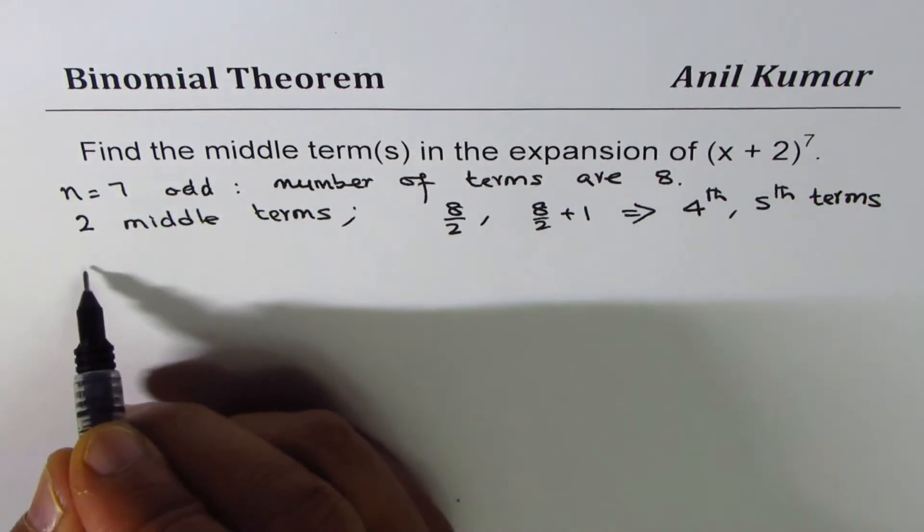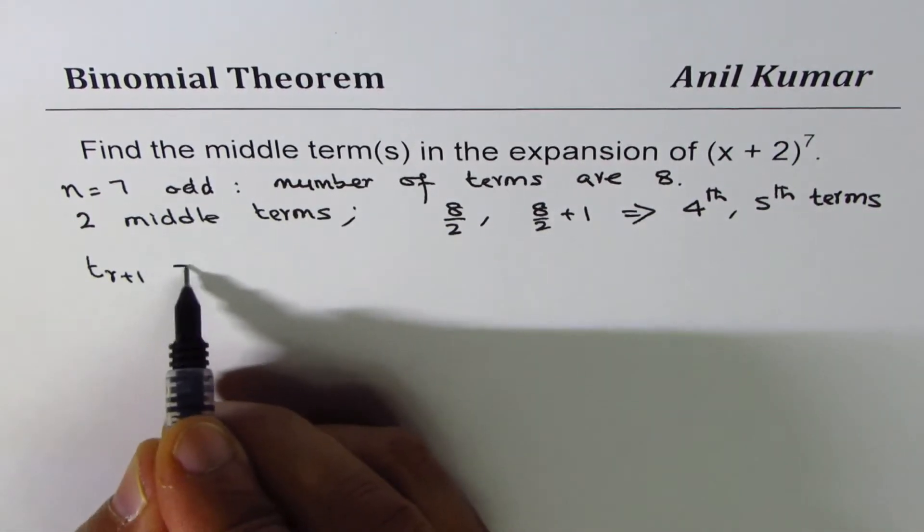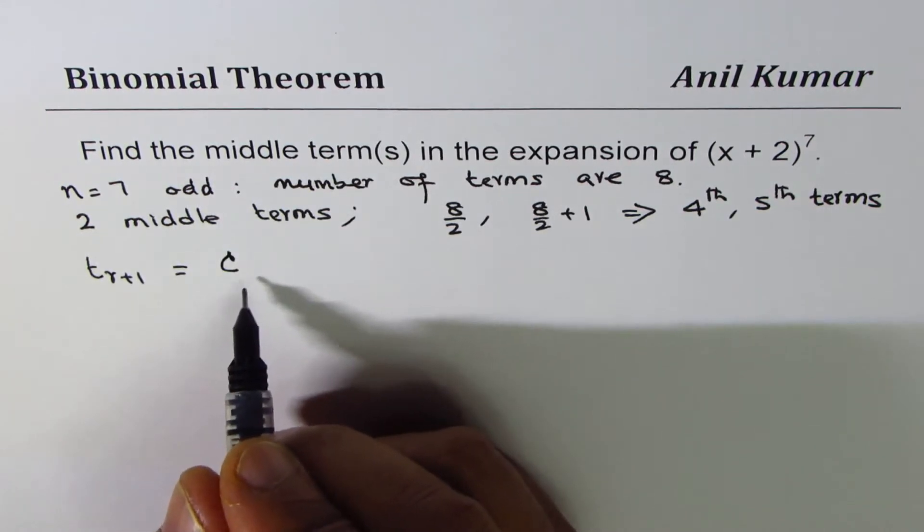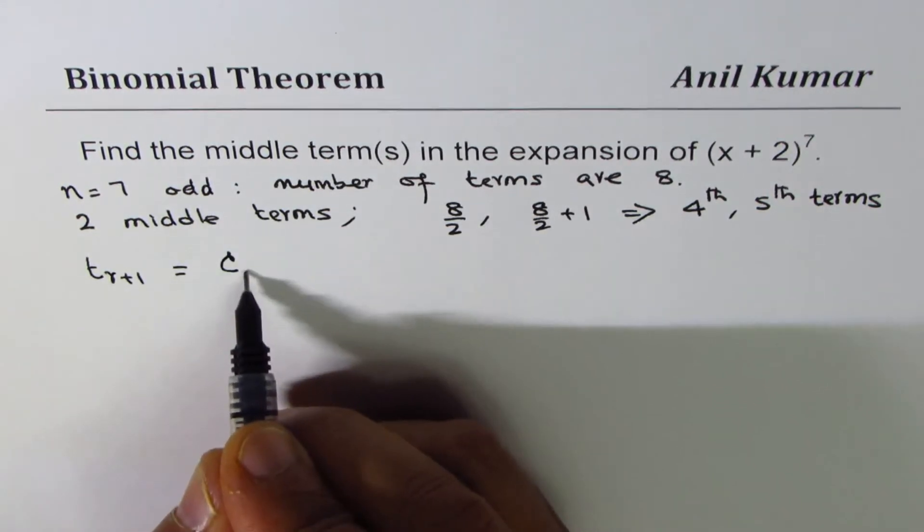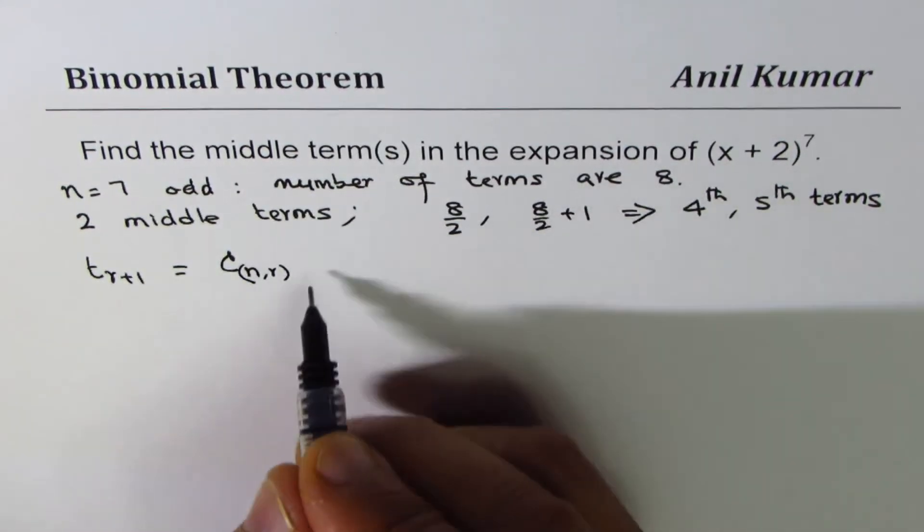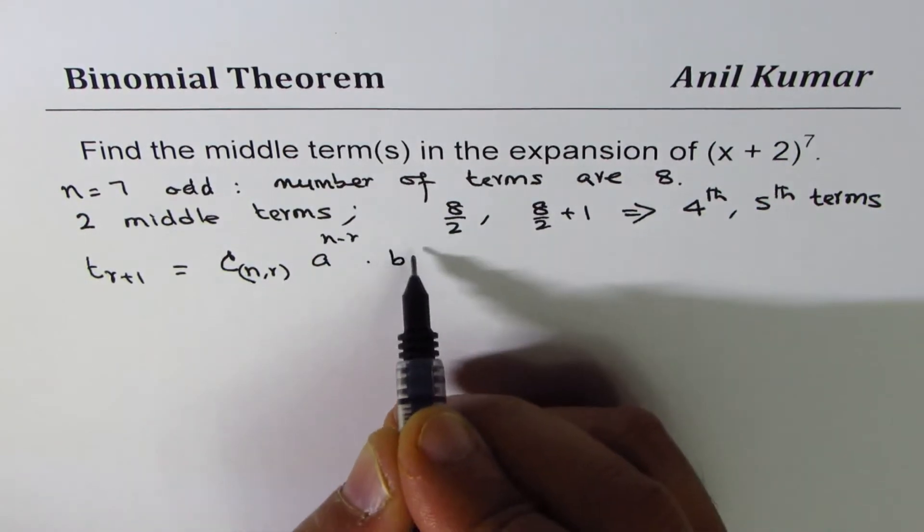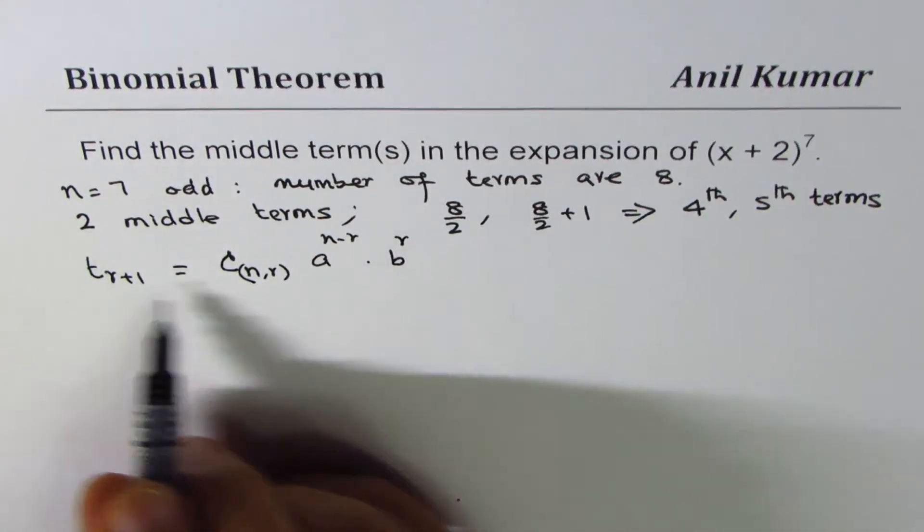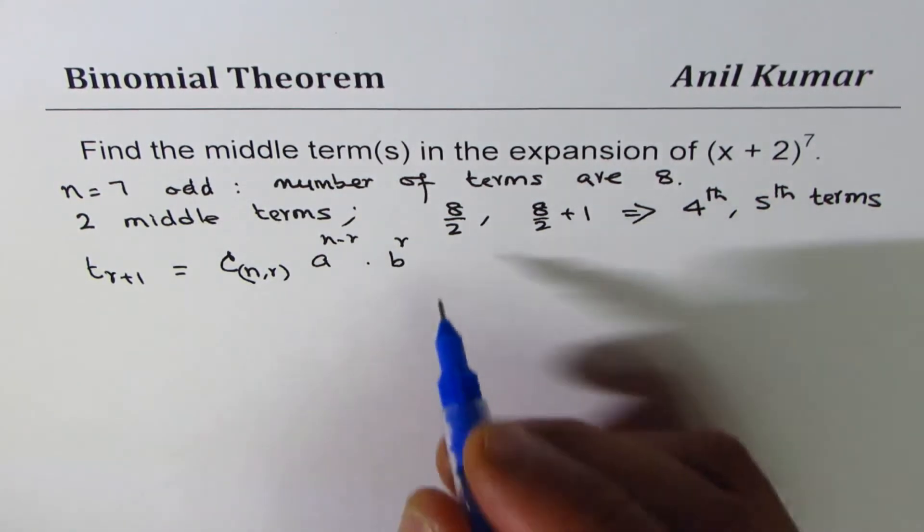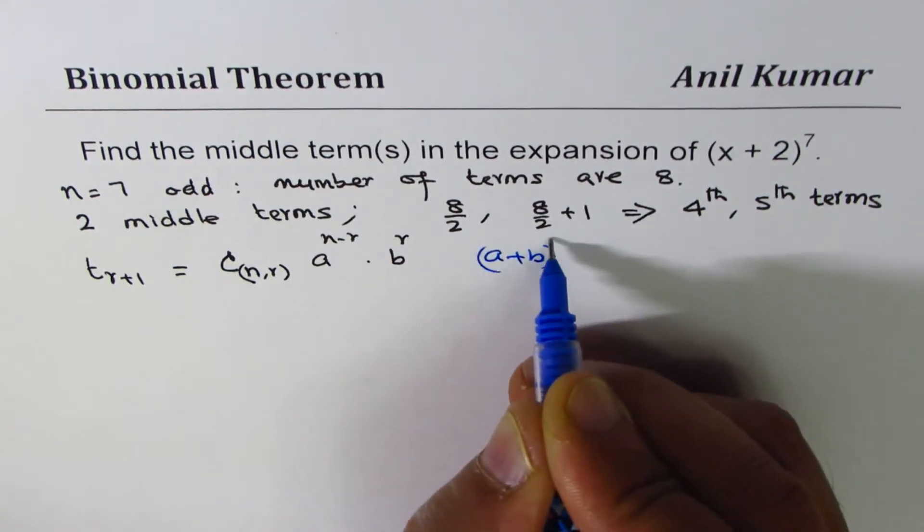Now T_R+1 is the general term which can be written as nCr. Let's write the general formula first: nCr times A^(n-r) times B^r. That is for an expansion of (A + B)^n.